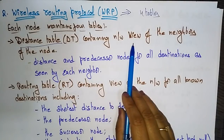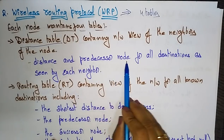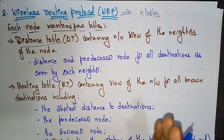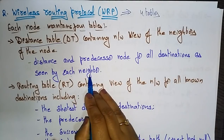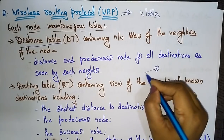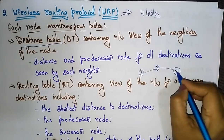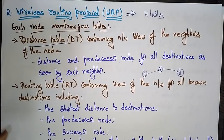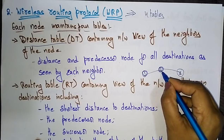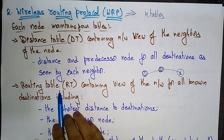The distance table contains the network view of the neighbors of the node — the distance and predecessor nodes for all destinations as seen by each neighbor. For example, if node 2 is the predecessor and node 1 is another node, the distance table records the distance and predecessor node for all destinations as seen by each participating node.